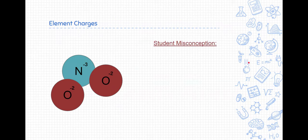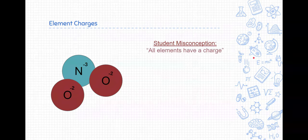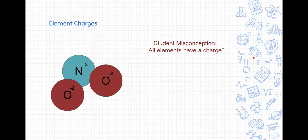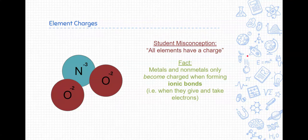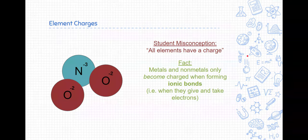Well, this relates to a really big student misconception. And the misconception is this. All elements have a charge. That's actually not true. And I understand why it's confusing, because we typically write charges next to elements on the periodic table. But I want to remind you that the elements do not start off with charges. Typically, metals and nonmetals become charged when forming ionic bonds.